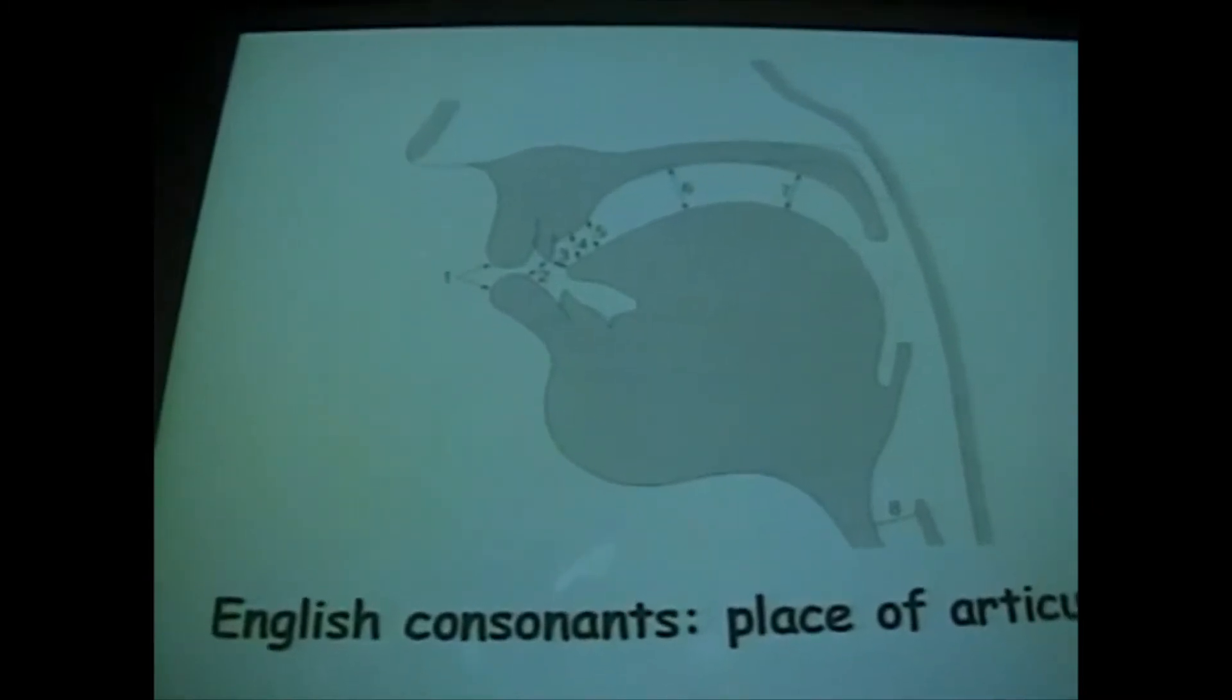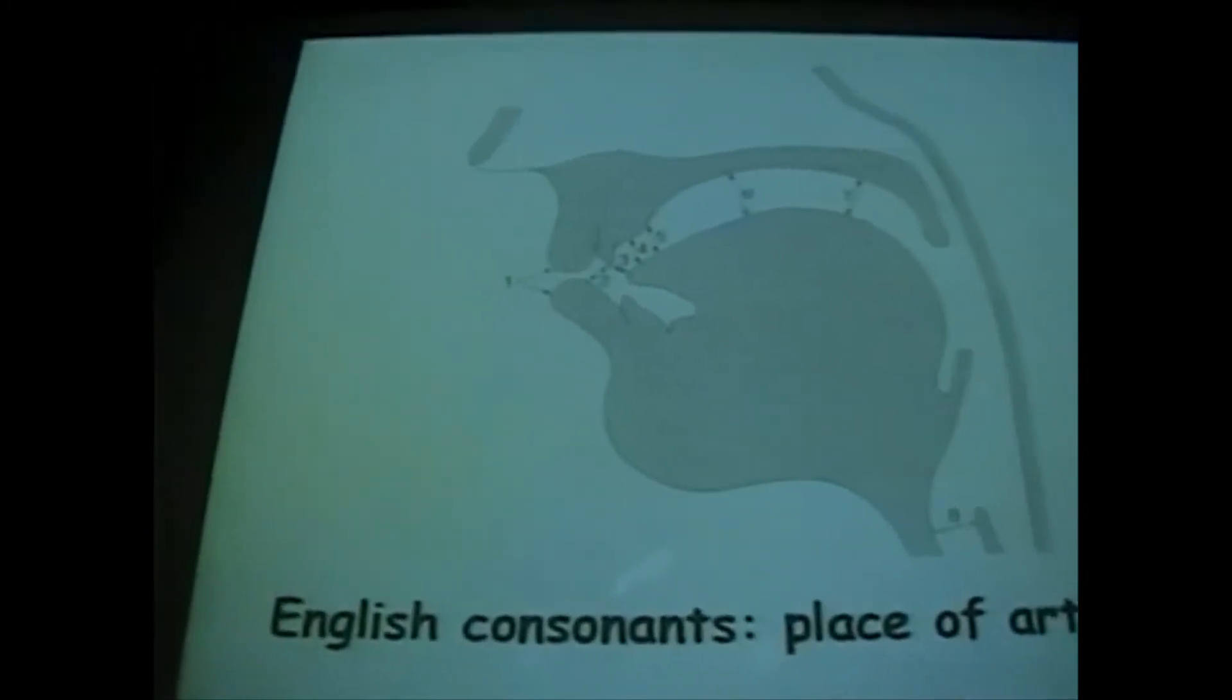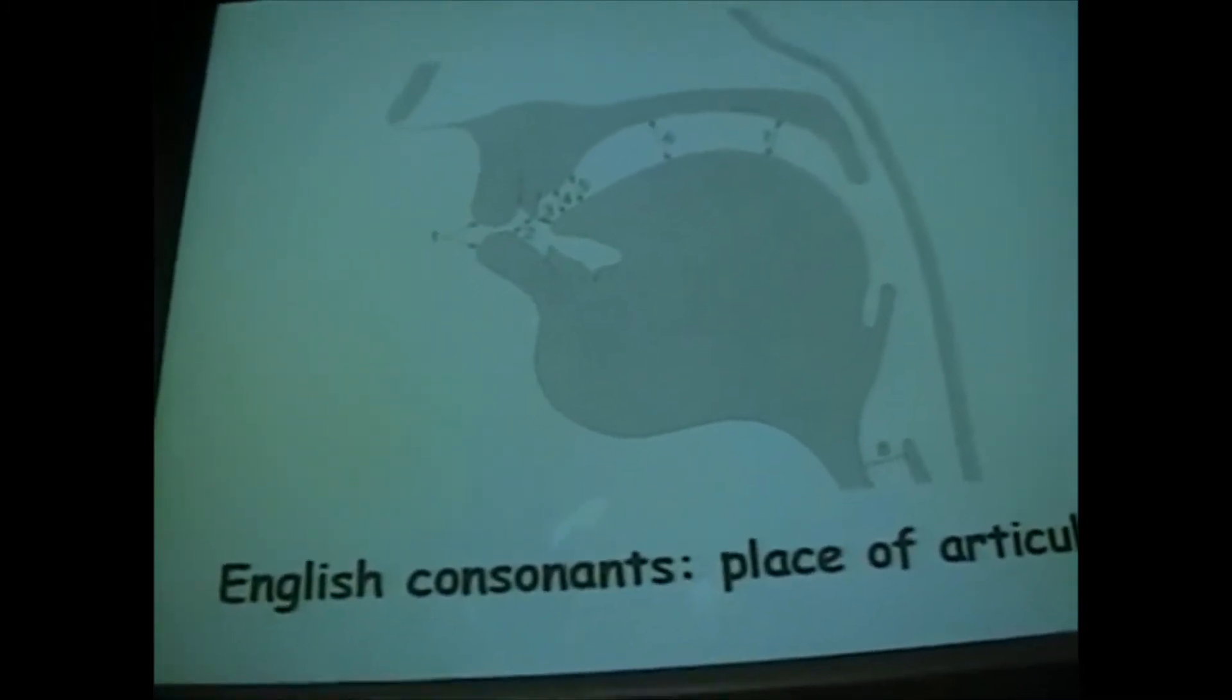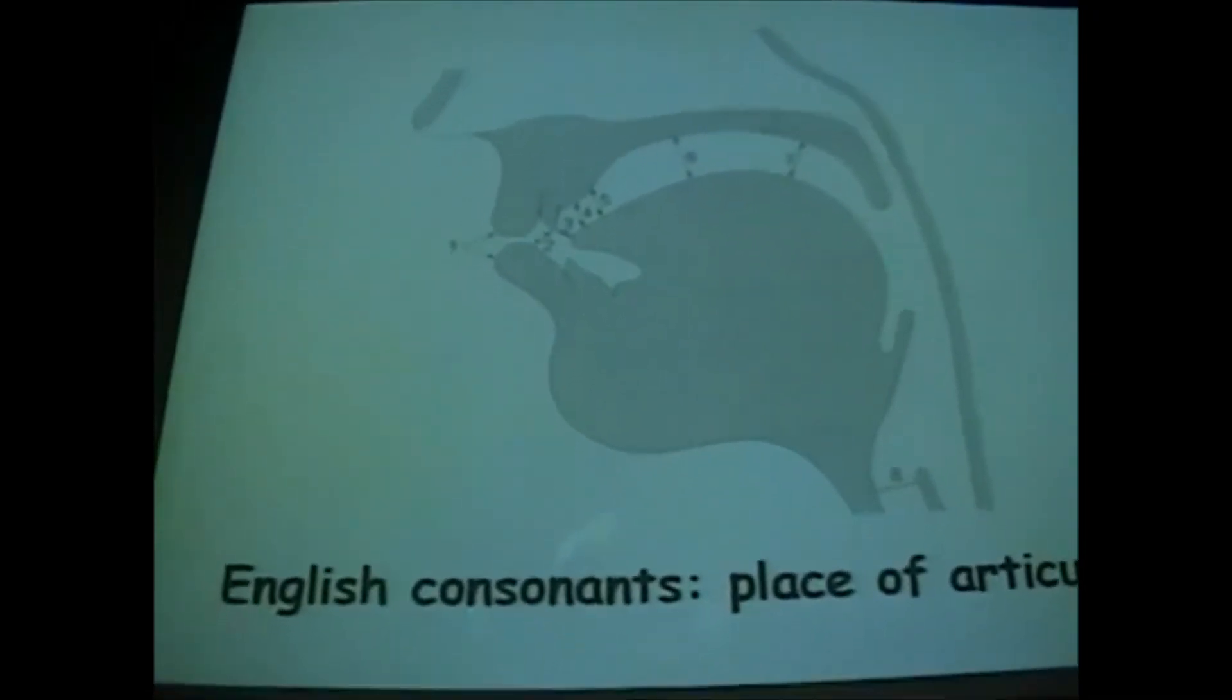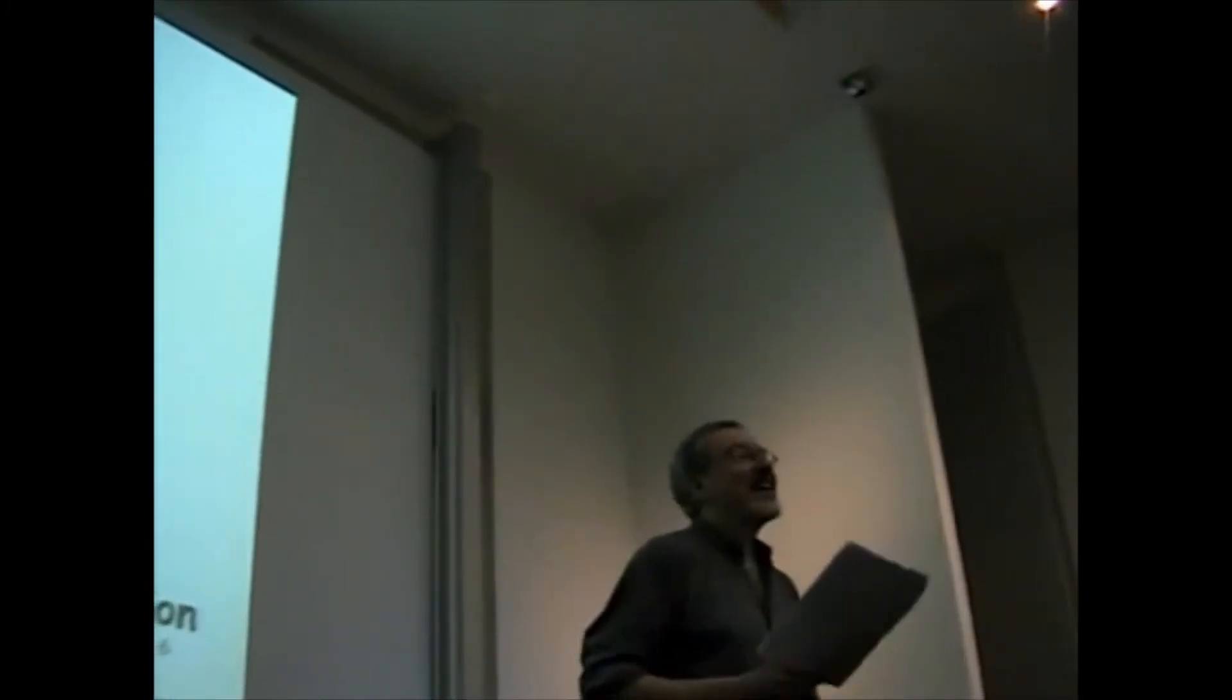Going on with our place descriptions, palato-alveolar gives the blade of the tongue and the rear of the alveolar ridge, front of the palate. This gives us the shushy sounds for English. Asha, aja. The two sounds we're going to call affricates, acha and aja. And palato-alveolar is the term that I use, and I believe my colleagues on the course will, almost without exception, be using it.